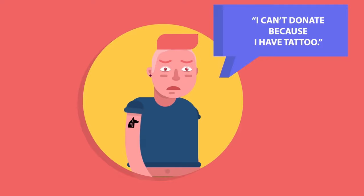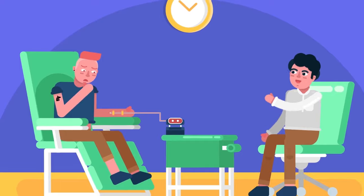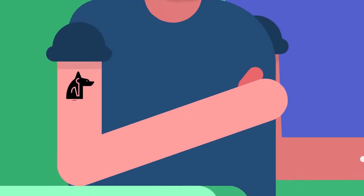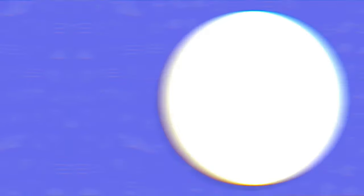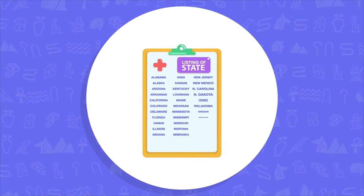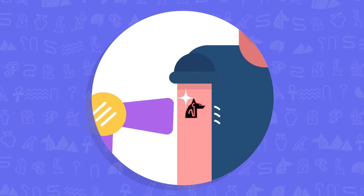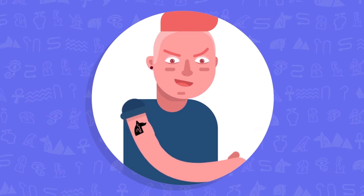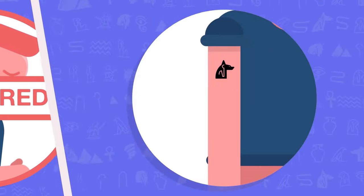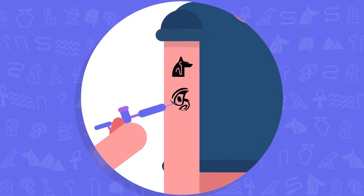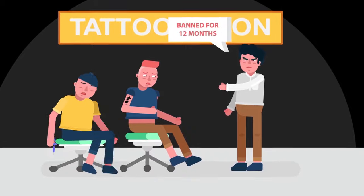I can't donate because I have a tattoo. Donors who have a tattoo or permanent makeup may donate if it was performed by a licensed tattoo artist in Ohio, Kentucky or Indiana. A complete listing of acceptable states can be provided upon request. The tattoo site must be clean, dry and pain-free or the donor is deferred until the site is healed. If the tattoo or permanent makeup was not applied by a licensed artist, donors are deferred for 12 months from the date of the application.